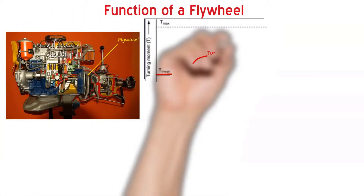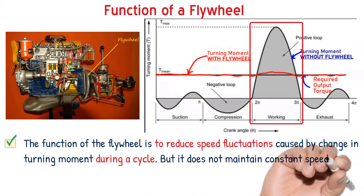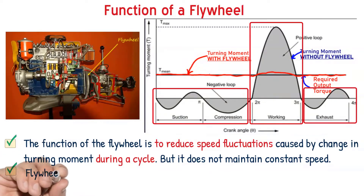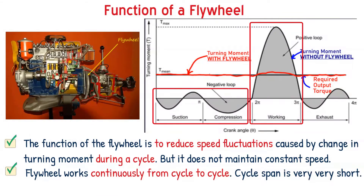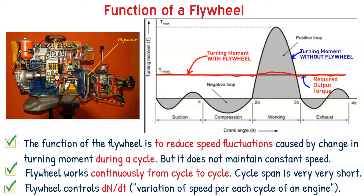We can very well understand the function of a flywheel by using a turning moment diagram for an engine. In an IC engine, only during the power stroke do we obtain power. The flywheel stores that excess energy during the power stroke and supplies the stored energy during the other three strokes — all four strokes consist of a cycle. So, the flywheel reduces the speed fluctuations caused by change in turning moment during a cycle. It does not maintain constant speed. The cycle time is very short — a matter of a fraction of seconds — so at the end of each cycle, energy stored by the flywheel becomes zero, and hence the flywheel works continuously from cycle to cycle.